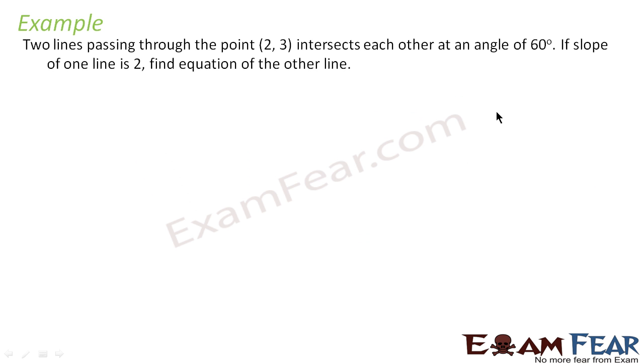Let's take a common problem. It says two lines passing through a point intersect each other at an angle of 60 degrees. If the slope of one line is 2, find the equation of the other line.